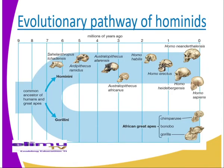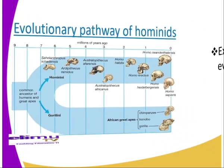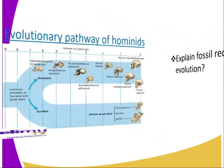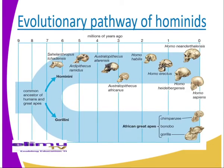Homo erectus has been discovered in Africa, Asia and also Europe. In addition to tool making, there is evidence of use of fire and some mode of communal life and work among the Homo erectus. Recently, the skeleton of Homo ergaster, nicknamed the Turkana boy, has been dated 1.56 million years old. This is currently the fossil of our human ancestor with the most similar body plan to modern human beings.